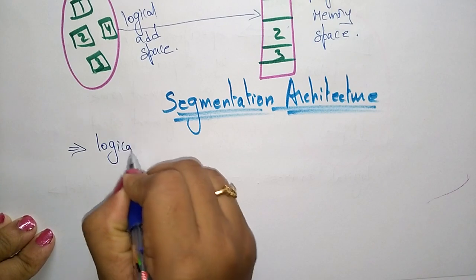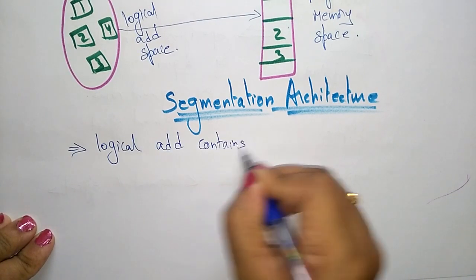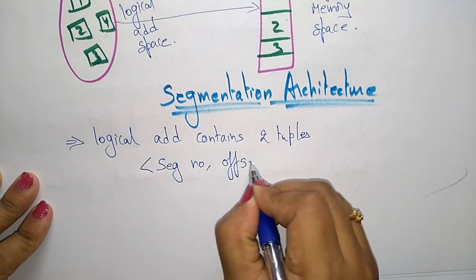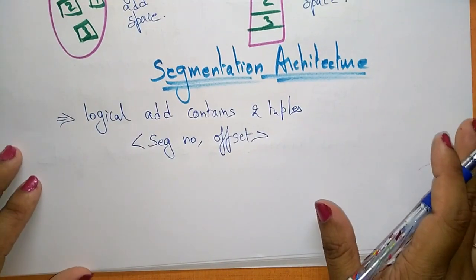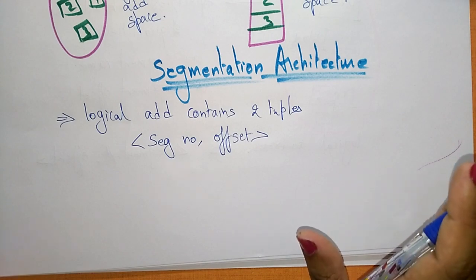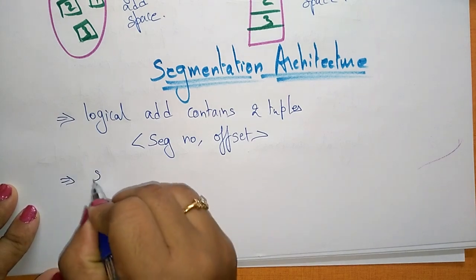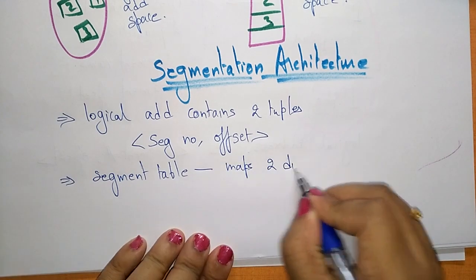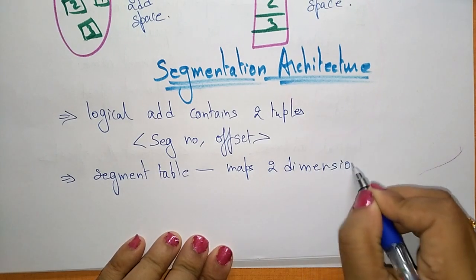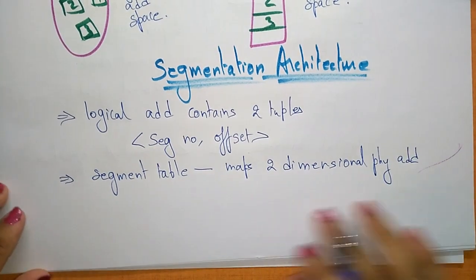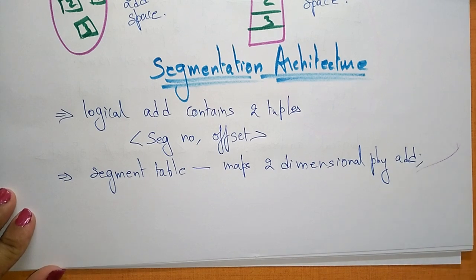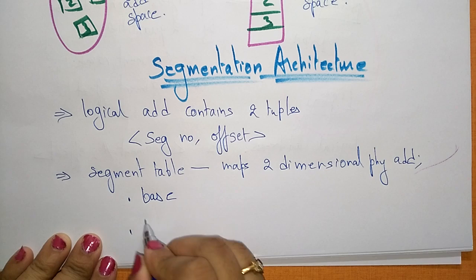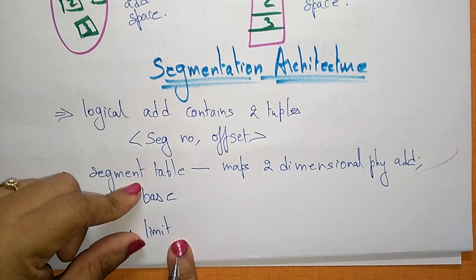Segmentation always stores the segment in a logical unit. The logical address contains two tuples: the segment number (or name) and the offset. In this segment architecture, you have the segment table, which maps two-dimensional physical address.